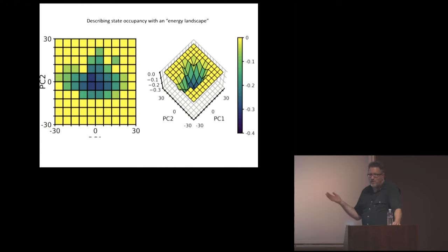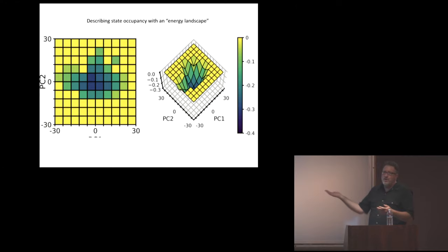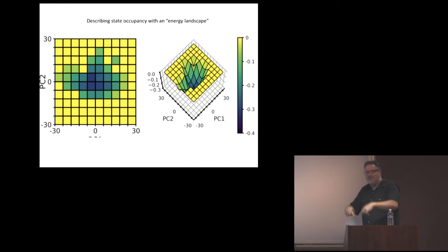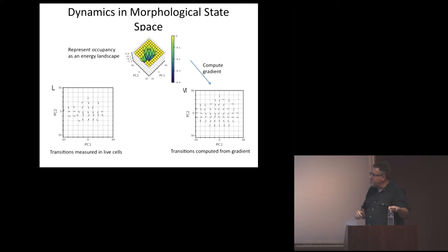Amy took the occupancy of the state space — the probability of being in any given state — and represented it as an energy landscape using Boltzmann statistics. You get this landscape, which has all the same information as the occupancy. If it was actually at equilibrium, you should be able to predict the dynamics by taking the gradient of that landscape: whenever you have a steep region, the cells should be moving down that steep side in state space. And remarkably, that's actually true. When she differentiates the energy landscape, it does predict which way the cells will be evolving over time.